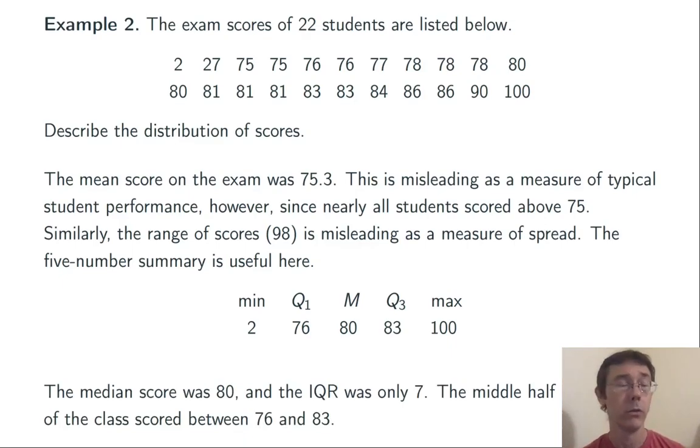So the IQR is only 7. The middle half of scores on this test are between 76 and 83. By looking at this measure, we see that the scores are actually fairly tightly packed around that median.